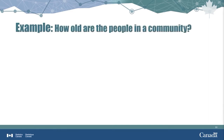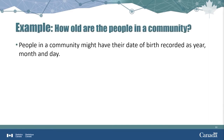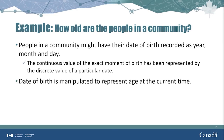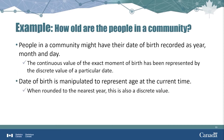Let's look at an example of working with different types of data. Let's say we want to know how old the people in a community are so that we can plan appropriate services and activities for them. In our example, we have the birth dates of the people in a particular community. Because time can be divided in an infinite number of ways, for example every second or millisecond, it is a continuous variable. However, for practical reasons, a hospital usually records the year, month, day, hour, and minute of birth. For administrative purposes, we usually just report the year, month, and day of birth, which means we're using a discrete representation of a continuous variable.